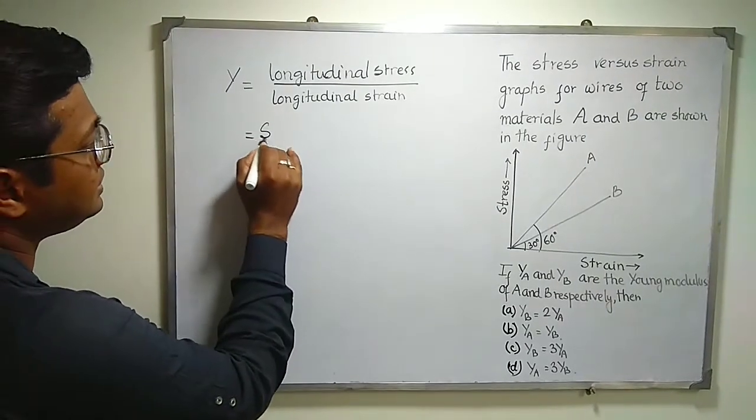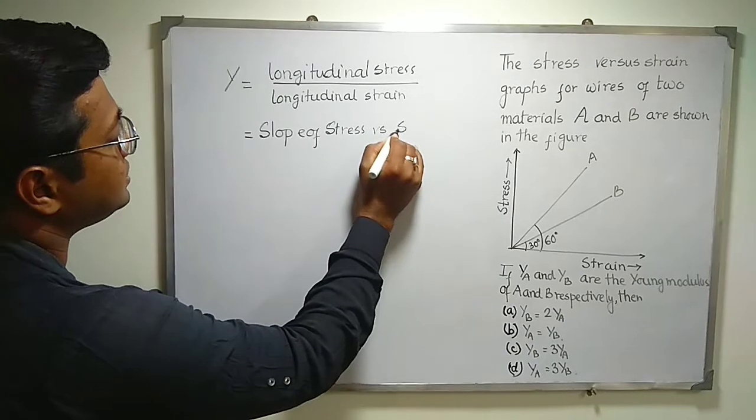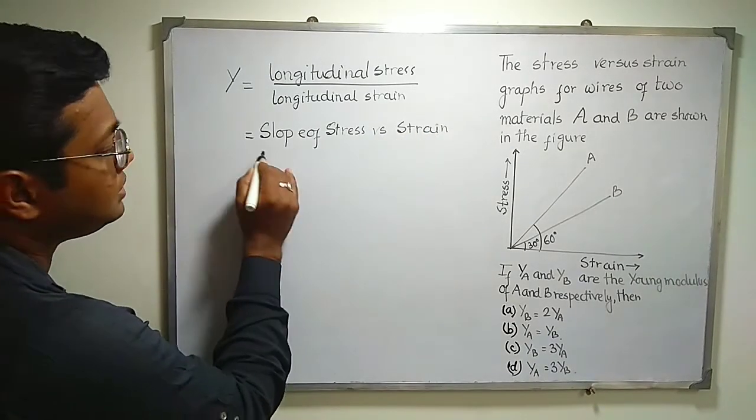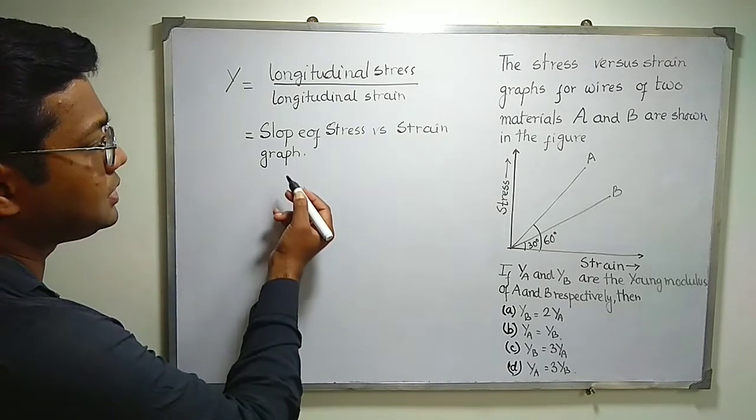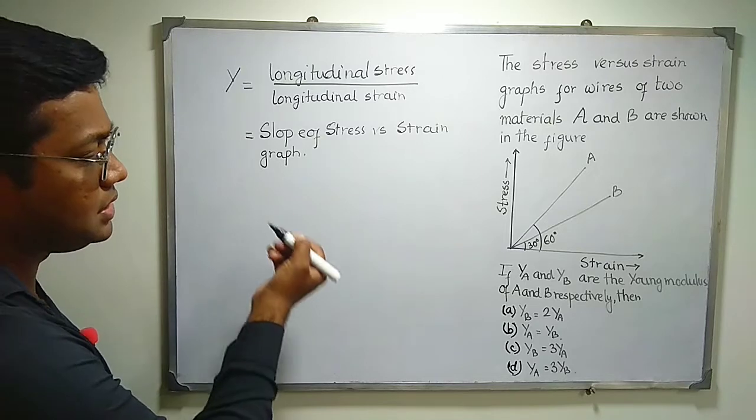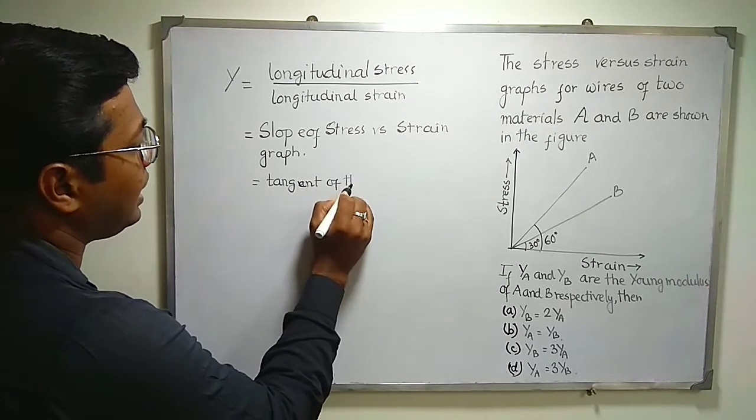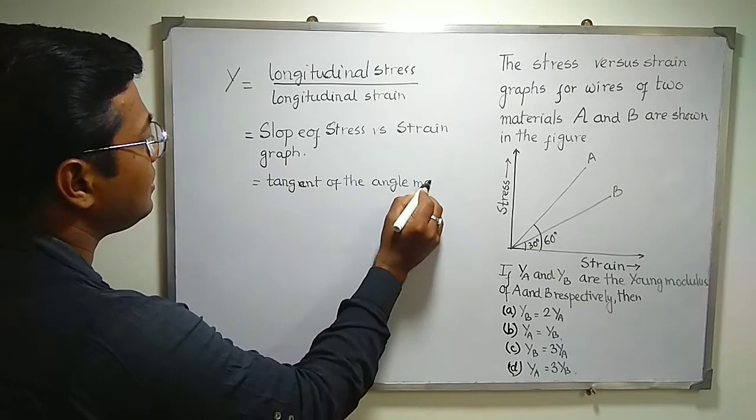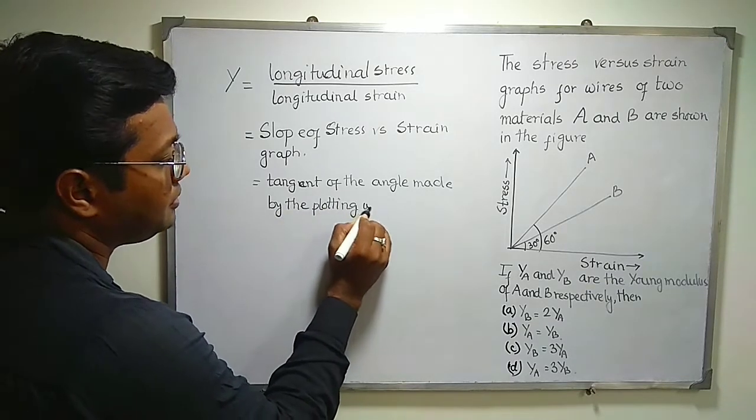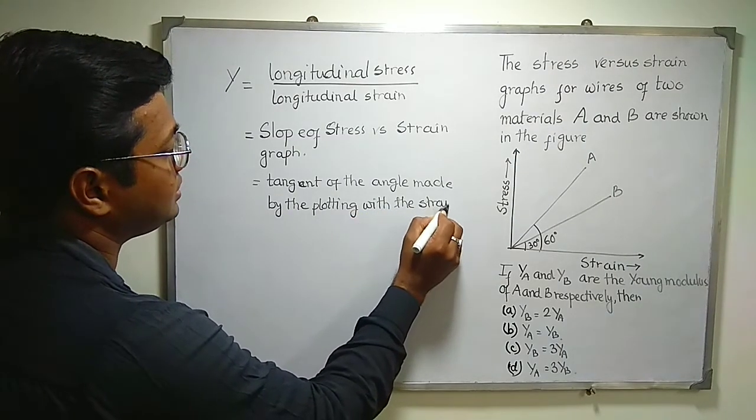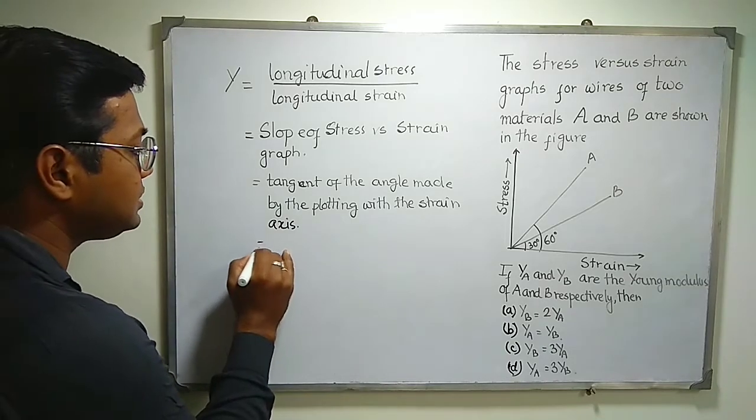From this graph we can see it is determined by the slope of stress versus strain graph. The slope of the stress-strain graph is the Young modulus. Because if you take the slope, you are taking the ratio of stress and strain. It can also be calculated mathematically as the tangent of the angle made by the plotting, here it is a straight line, with the strain axis or the variable on the x-axis. So it becomes simply tan theta.